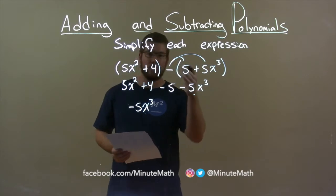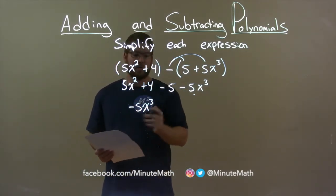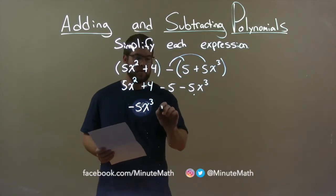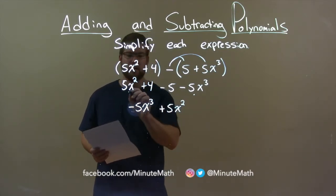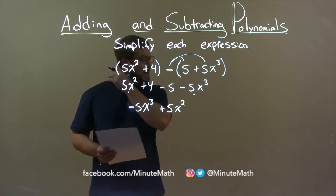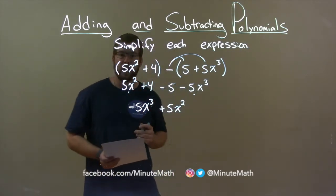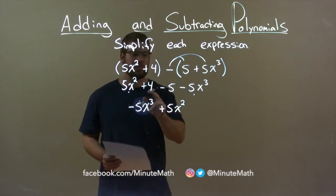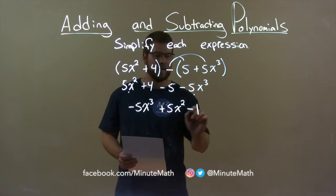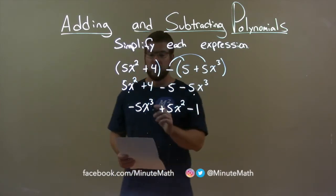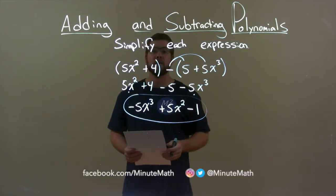I put a dot underneath to show that I brought it down. The next thing is x squared — there's only one of them, so that's pretty easy: positive 5x squared. Next I see there are no x's, so it's just numbers, 4 and minus 5. We need to combine the two: 4 minus 5 is negative 1. And there we have it — our final answer: minus 5x to the third plus 5x squared minus 1.